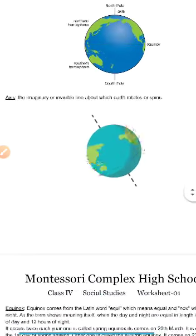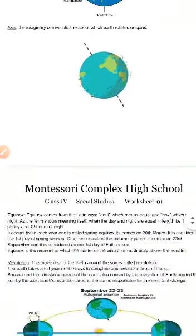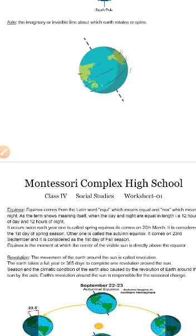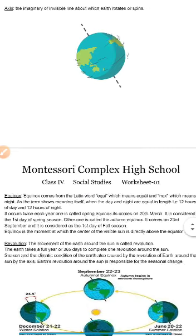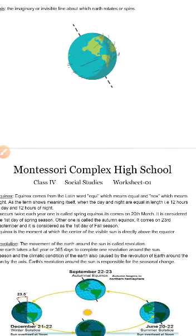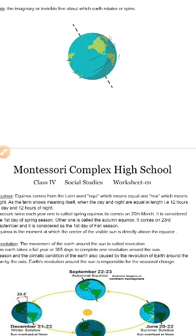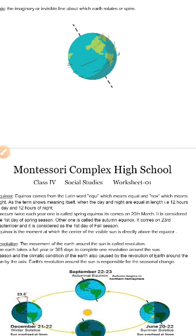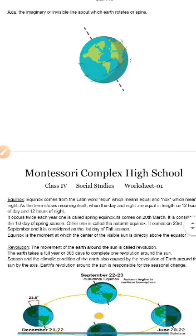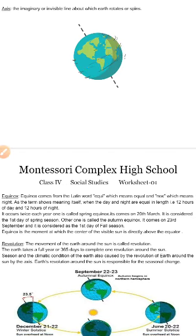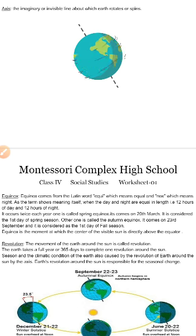The next term is equinox. Equinox comes from a Latin word — 'equi' which means equal and 'nox' which means night. These are the days where the night has equal hours as the day — both night hours and day hours are equal, meaning 12 hours of day and 12 hours of night. It occurs twice each year.